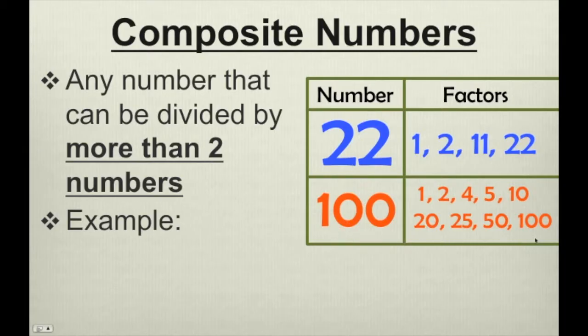It's definitely composite. It has a whole lot of factors. So again, any number that can be divided by more than 2 numbers evenly, or has more than 2 factors, is a composite number.